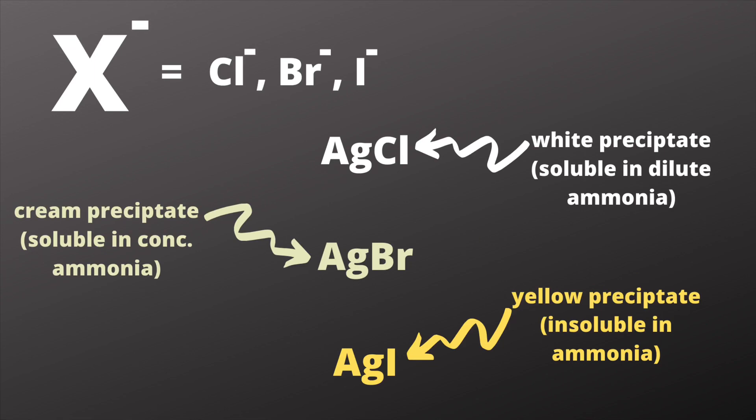For instance, AgCl that's formed when Ag⁺ and Cl⁻ react together is actually soluble in dilute ammonia. AgBr that forms when Ag⁺ and Br⁻ ions are reacted together is going to be soluble in concentrated ammonia.